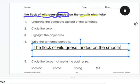We have two adjectives together. It's kind of like a list of words. If you have two adjectives together, you separate them with a comma. So the flock of wild geese landed on the smooth, comma, and then clear lake.